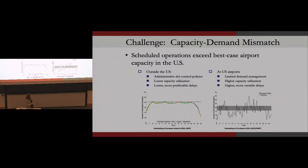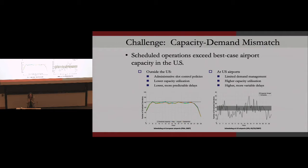Contrast that with Europe. At Frankfurt, they have ensured that the number of flights scheduled is below capacity. To be fair, there is one advantage to what we do — capacity in our aviation system is really scarce, and when you plan to never use more capacity than exists, like in the European system, you often end up with excess capacity and waste it. In our system, we waste much less capacity, but the result is highly variable experiences with respect to delays.